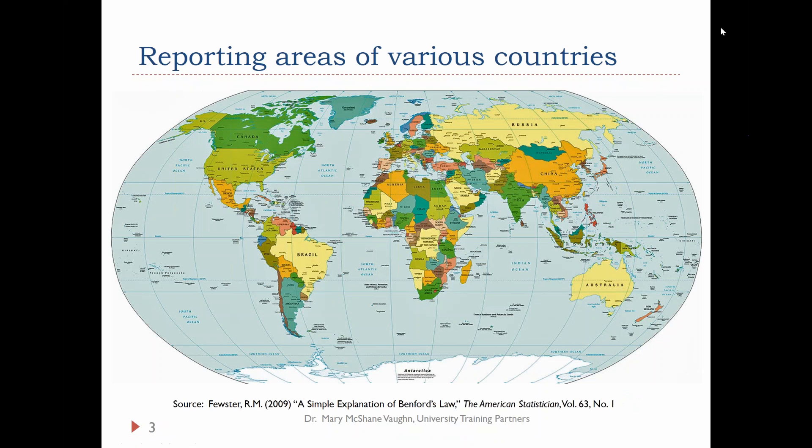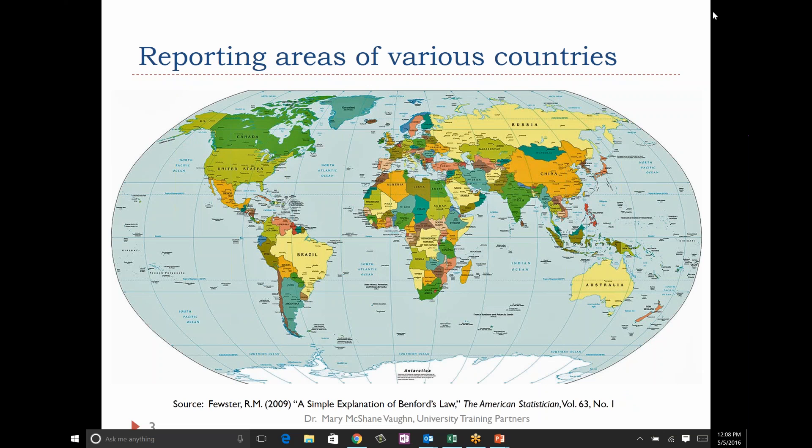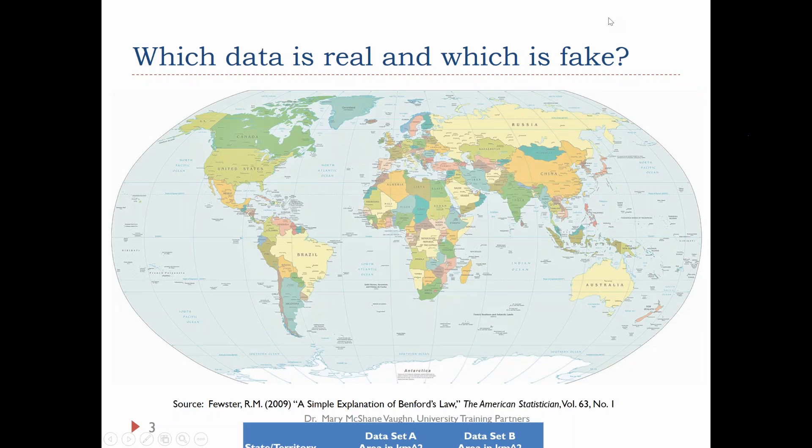The first topic we're going to talk about is how to detect fraudulent data. Let's think about reporting areas of various countries. We have two data sets, data set A and data set B, and they're reported in kilometers squared. I don't have a real good feel for square kilometers in my head, but you look at this data and you have to say, one of these columns is the real data and the other one is fake data.